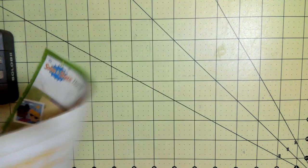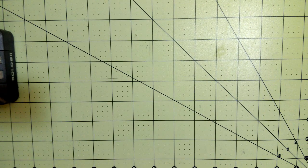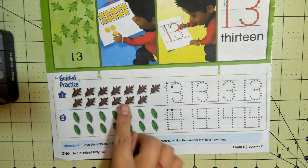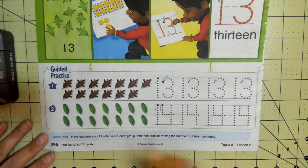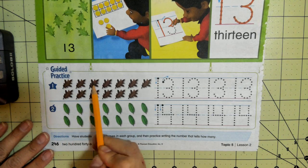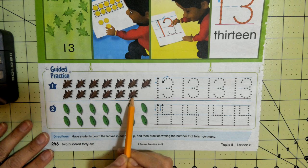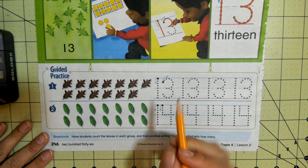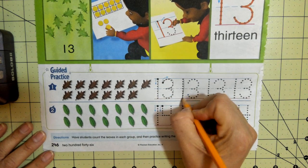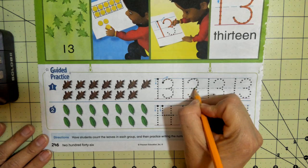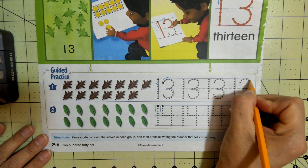So what you're going to do on pages 246 and 247 is you're going to count the objects and then write the number. So let's look at the first one. Let's count. 1, 2, 3, 4, 5, 6, 7, 8, 9, 10, 11, 12, 13. There's 13. So we would write the number 13, a 1 first and then a 3. So on page 246, you'll just be tracing. Okay, the 1 first and then the 3 for 13.